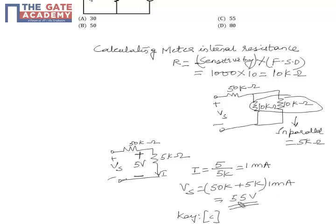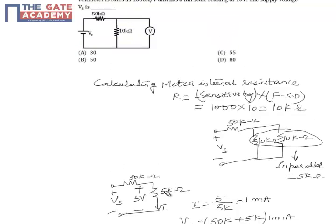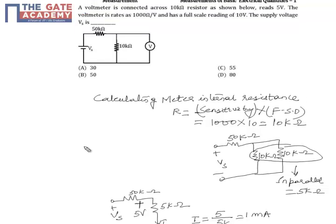This gives us 55 volts, and 55 volts is the source voltage Vs. So here the correct option is C.